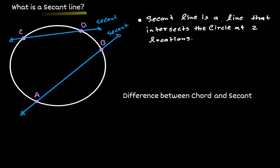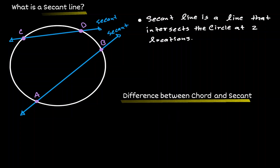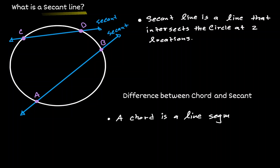The difference between a secant line and a tangent line is that a tangent line only intersects the circle at one location. If we look at the definition we have stated, we also described a chord as a line that intersects the circle at two points. So what is the difference between a chord and a secant line? A chord is just a line segment — it has a starting point and an ending point.